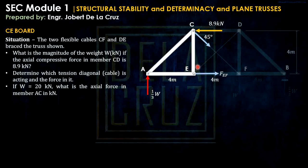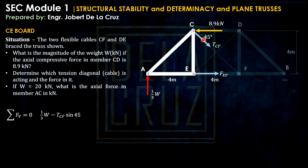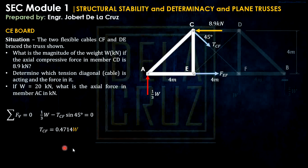So the cable that is functioning is CF — that is the tension diagonal. With CF as the active cable, the truss is now determinate. From vertical equilibrium of the left section: one-third W minus TCF times sine 45 = 0. Solving, TCF = 0.4714 W.